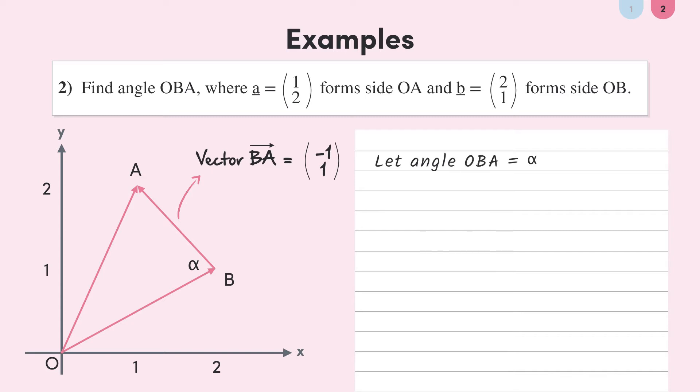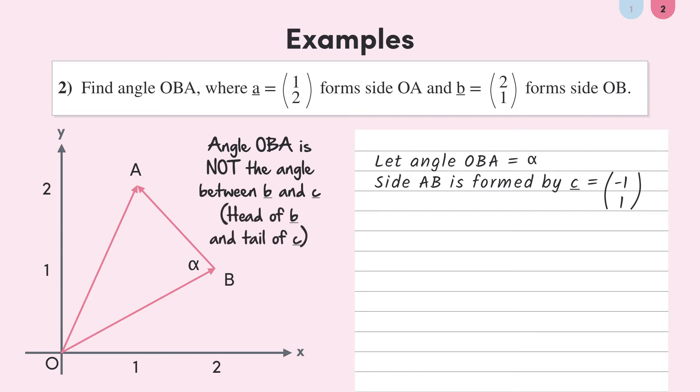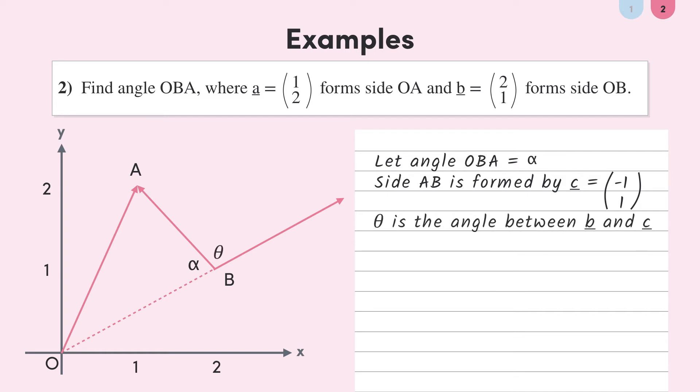There's an urge to now think that the angle OBA will be given by the angle between vectors b and c. But this angle is not between the two tails of the vectors. Remember, that was what the angle between two vectors was defined to be. The angle OBA is the angle between vector b's head and vector c's tail. How do we get around this? Instead, if you shifted vector b like this, the actual angle between vectors b and c is this. If we find this angle, we will then know angle OBA, because the angles on a straight line add up to 180 degrees.